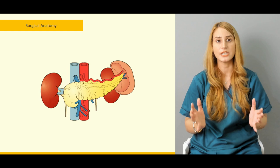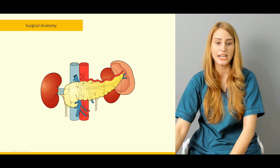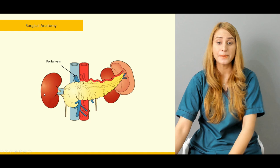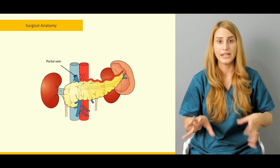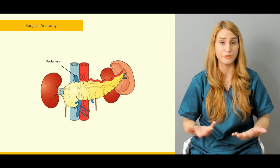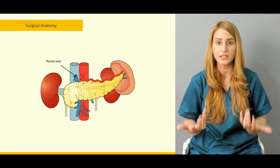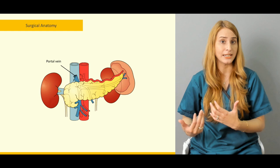Looking at the diagram, you can see the right kidney, the portal vein, and other important relationships of the pancreas. Because it occupies a very central position, it is related to very important structures. Both kidneys are also retroperitoneal, and the pancreas extends from the epigastrium to the splenic hilum in the left hypochondrium.